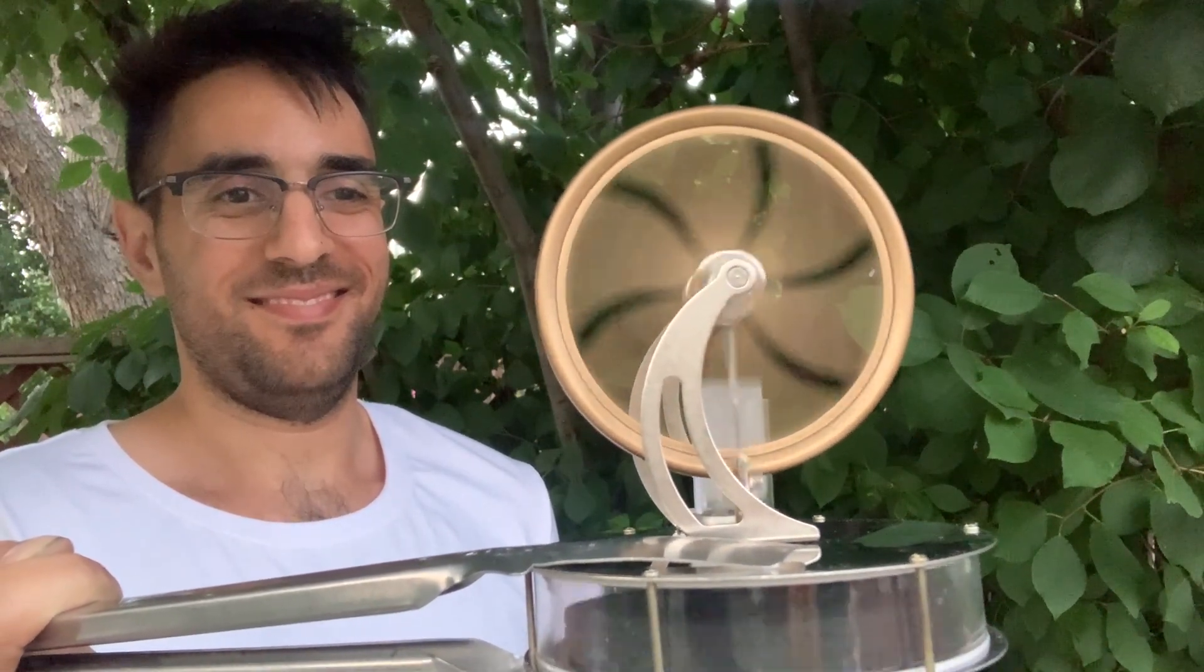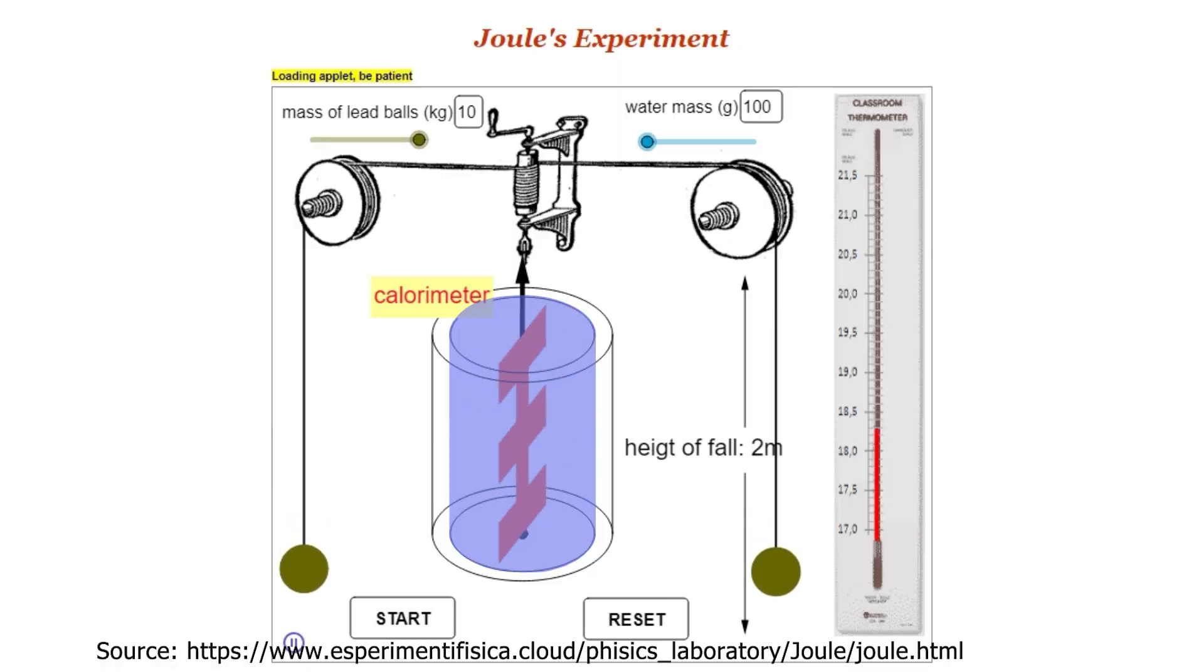The first law is great. Don't get me wrong. But it doesn't explain everything. Things like efficiencies, the quality of an energy, and the direction that a process can move in require another law to explain them. Can we run Joule's experiment in reverse, using the water's energy to spin the weights back up? The first law doesn't prohibit this, but the answer is no.